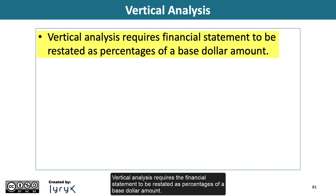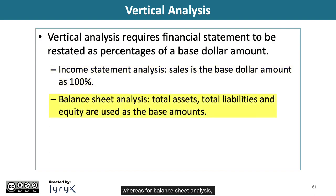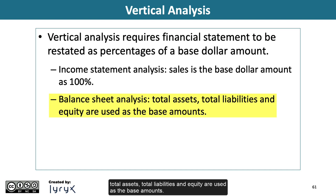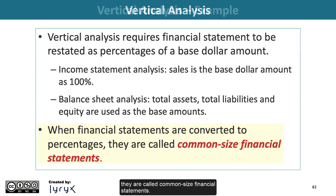Now let's move on to vertical analysis. Vertical analysis requires the financial statement to be restated as percentages of a base dollar amount. For income statement analysis, sales are the base dollar amount at 100%, whereas for balance sheet analysis, total assets, total liabilities, and equity are used as the base amounts. When financial statements are converted to percentages, they are called common-size financial statements.